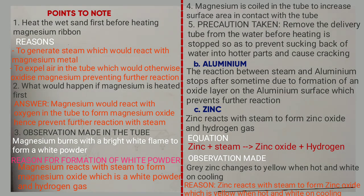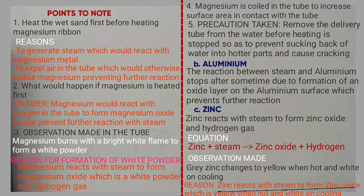The last metal is iron. Iron reacts with steam to form triiron tetraoxide plus hydrogen gas. Equation: Fe + steam → Fe₃O₄ + H₂. Observation: grey iron changes to black. Reason: heated iron reacts with steam to form triiron tetraoxide, which is a black solid. Learners, that is the end of the lesson. In the next lesson, we are going to look at hydrogen gas.